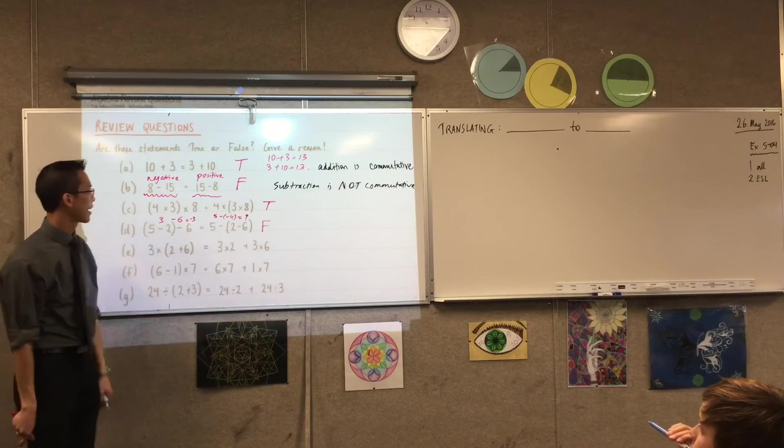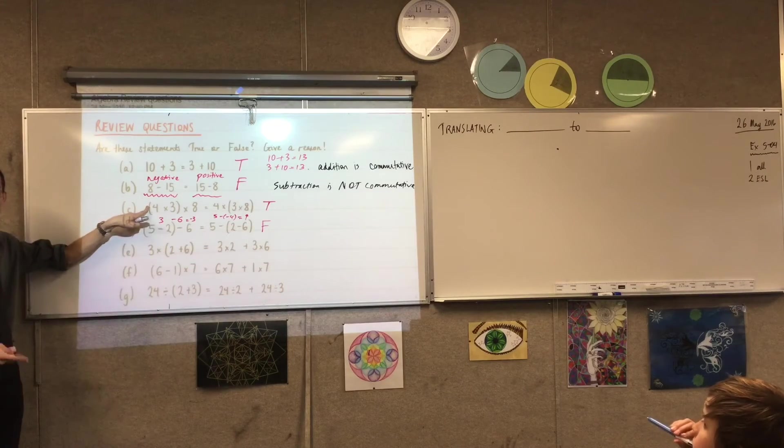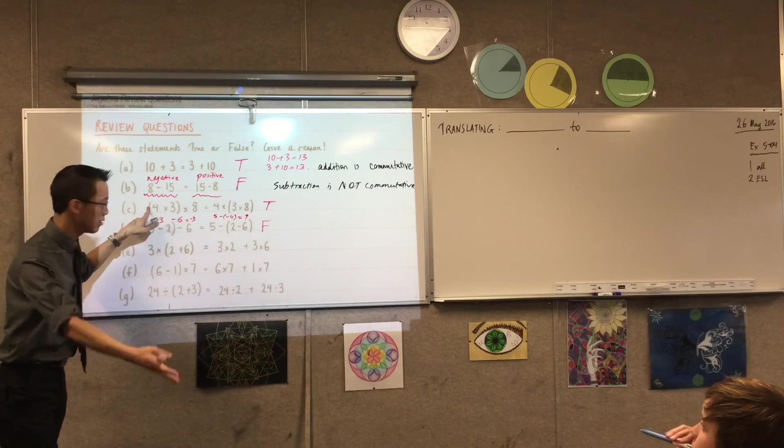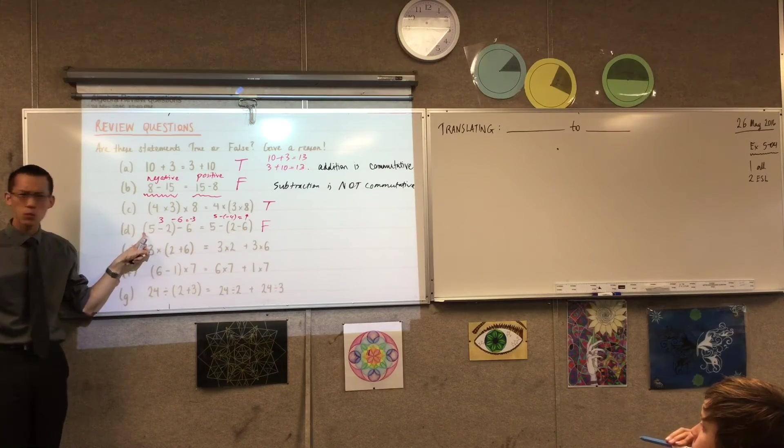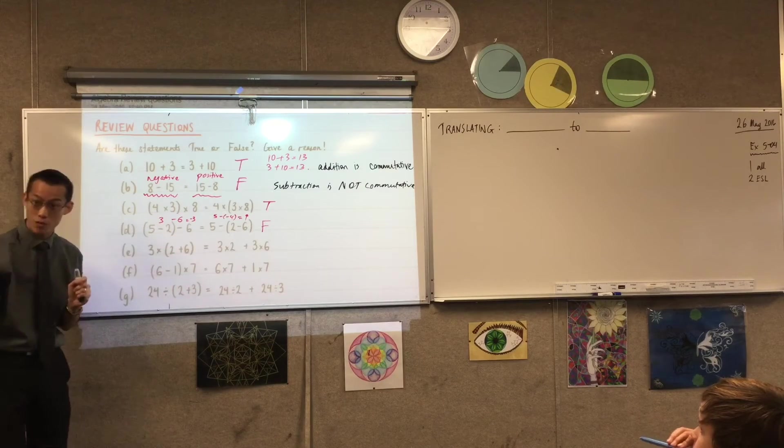Okay, so these two, clearly different. That's why it's false. But just like I said, multiplication is associative. What I could say here is, what's the operation here? What's in between all of my numbers?